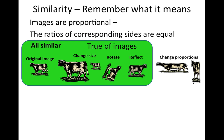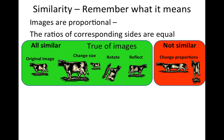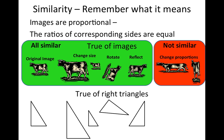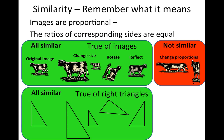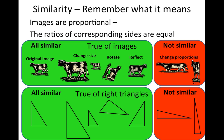But if you change the proportions — make it really thin or really tall — those are not similar. And it's true of pictures of cows, and it's also true of right triangles. All of these right triangles here are all similar, because the ratios of their sides are equal. But if you were to stretch those triangles out, then those are not similar to the original one.